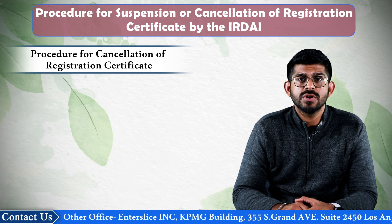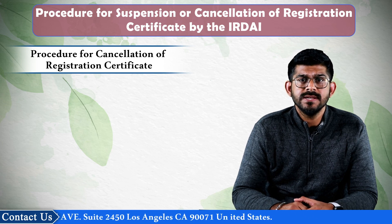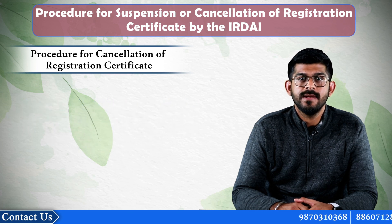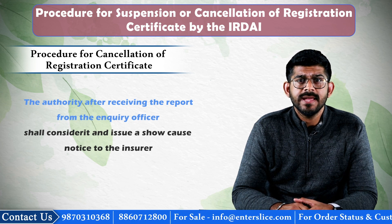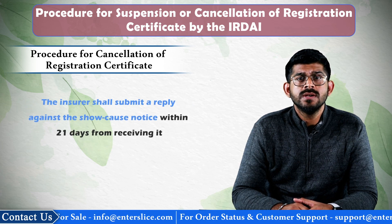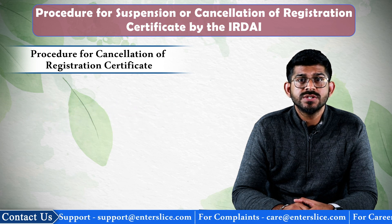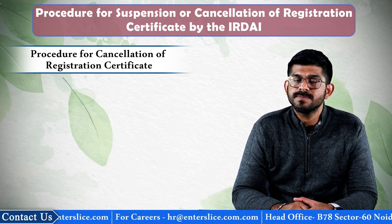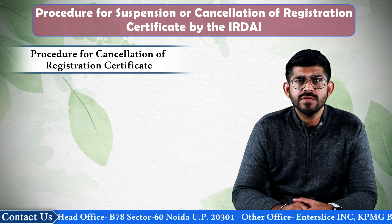The insurer can appear before the inquiry officer either in person or through any person authorized by it. However, an advocate is not allowed to represent the insurer at the inquiry. Further, if the authority has appointed a presenting officer who is an advocate, then it will be lawful for the insurer to present its case. The inquiry officer shall, after considering all the facts and documentary evidences presented by the insurer, submit a report to the authority and recommend the penalty and the reasons for imposing such penalty. The authority, after receiving the report from the inquiry officer, shall consider it and issue a show cause notice to the insurer seeking an explanation as to why the action shall not be taken. The insurer shall submit a reply against the show cause notice within 21 days of receiving it. The authority, after considering the reply, shall pass the order within 30 days; and in case no reply has been received within 90 days, the authority can pass the decision ex parte. The order shall include the reasons for the decision and justification for the penalty imposed.